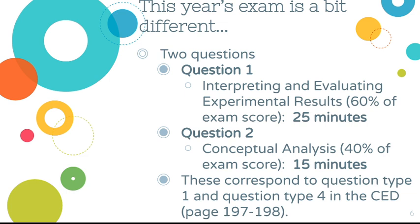This year's exam is different: it's given at home, it's only two questions, and those questions carry different weights. Question one tests your ability to interpret and evaluate experimental results — it's a 25-minute writing period and counts for 60 percent of your exam score. Question two is conceptual analysis, worth 40 percent, with a 15-minute writing portion.